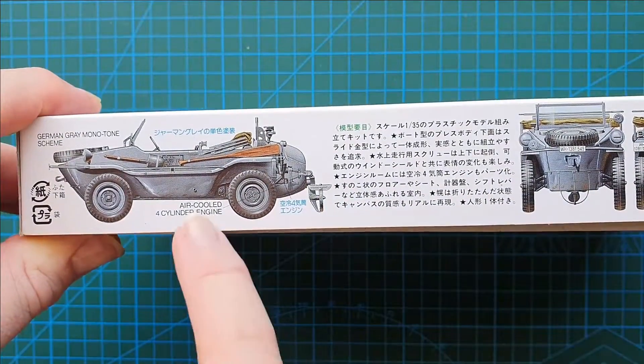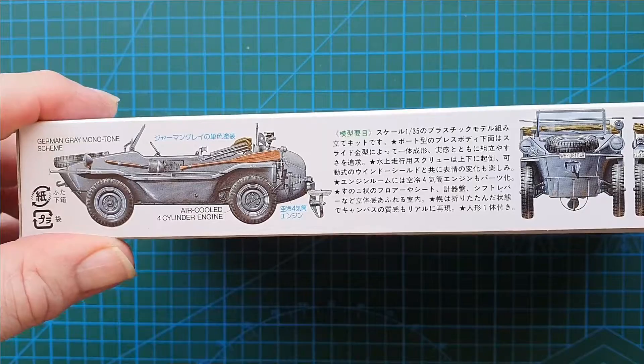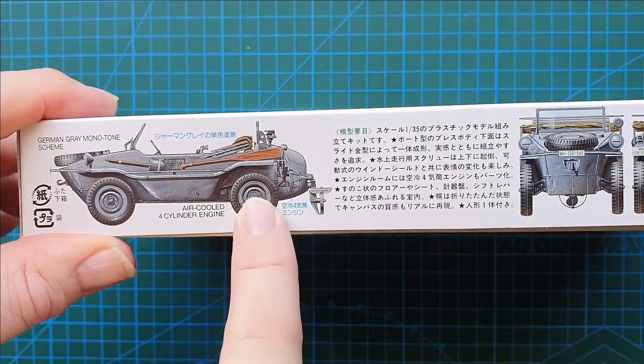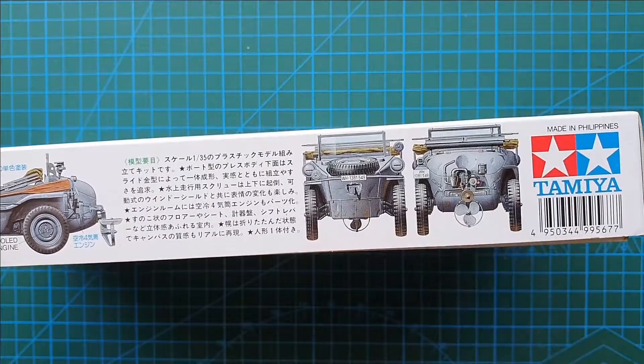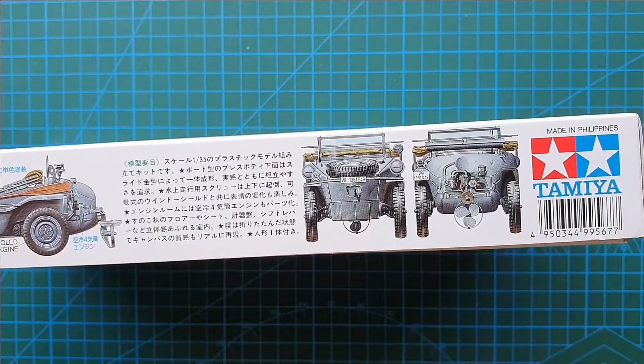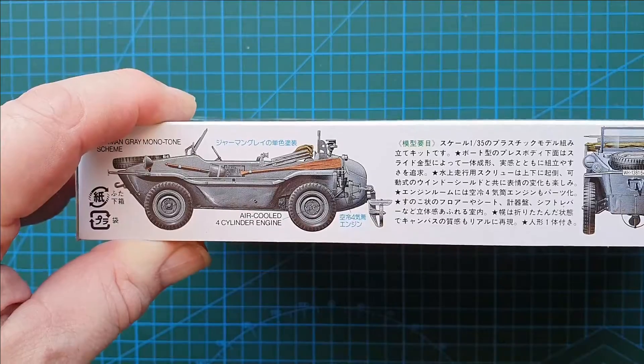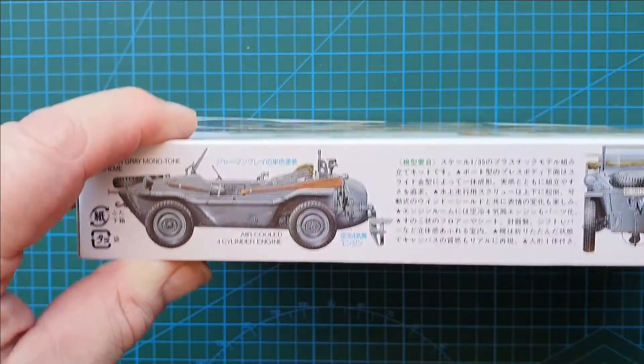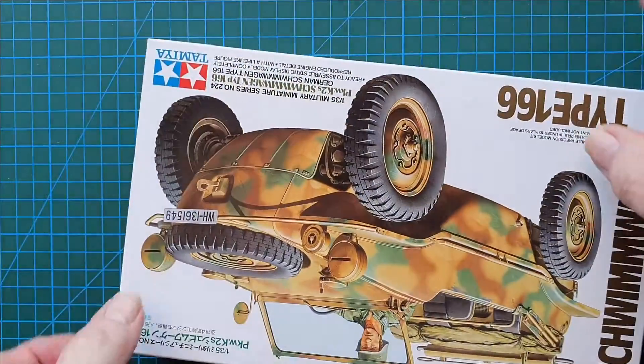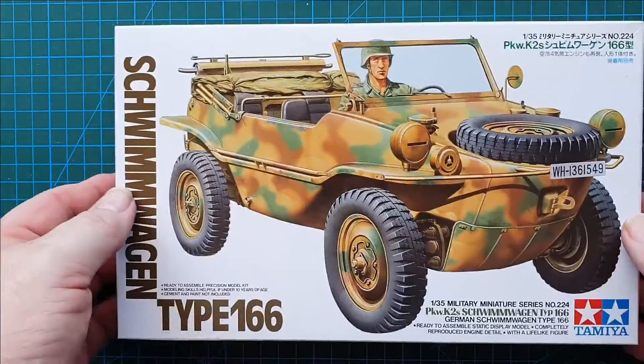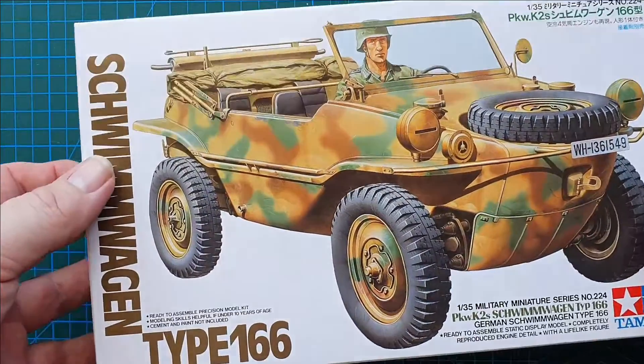On the other side, same again, so overall gray. Okay, so needless to say this is a Schwimmwagen so it does have a little propeller on it. It does have oars that go with it. It was powered by an air-cooled four-cylinder engine, standard Volkswagen engine. Okay, so let's have a look and see what's in the box.